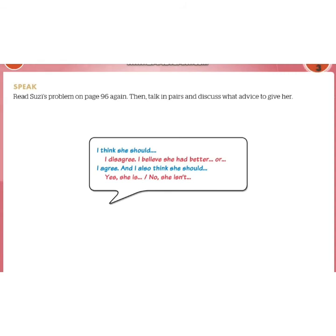Read Susie's problems on page 96 again, then talk in pairs and discuss what advice to give her. Use phrases like: 'I think she should,' 'I disagree,' 'I believe she had better,' 'I agree and also think she should,' 'Yes, she is' or 'No, she isn't.'